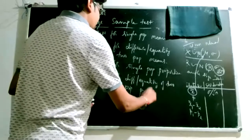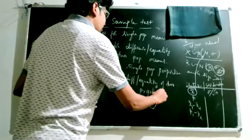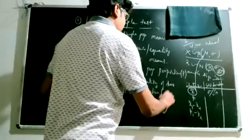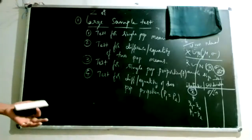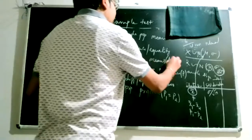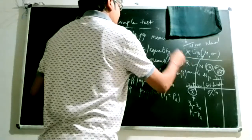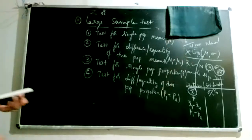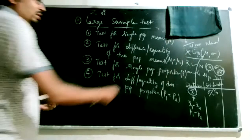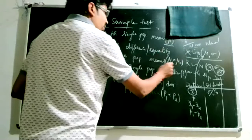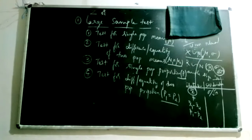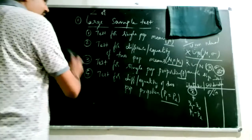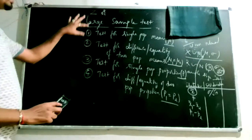Proportion is indicated by p. For two proportions, we check whether p1 equals p2, or whether p1 minus p2 equals some quantity (zero or non-zero). These four are the Z-tests available: test for single mean, difference of two means, single proportion, and difference of two proportions.